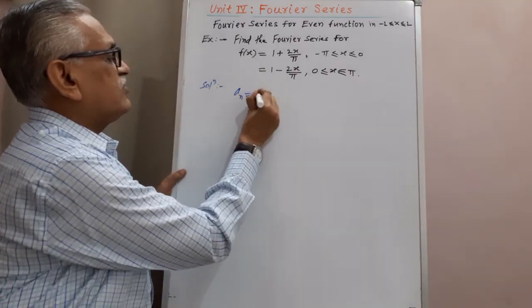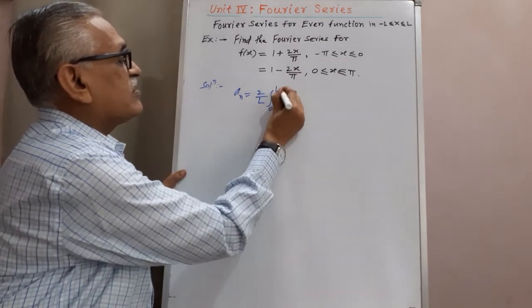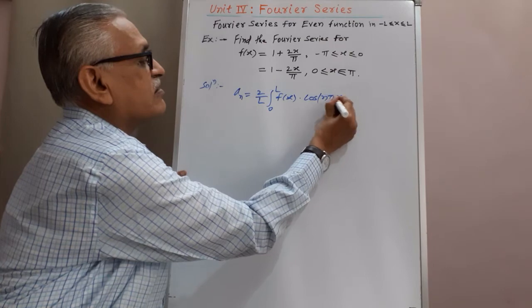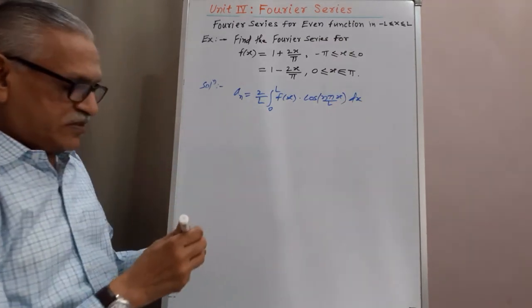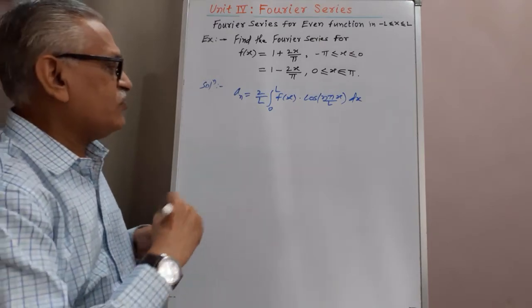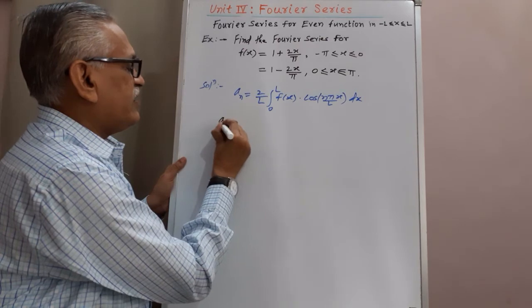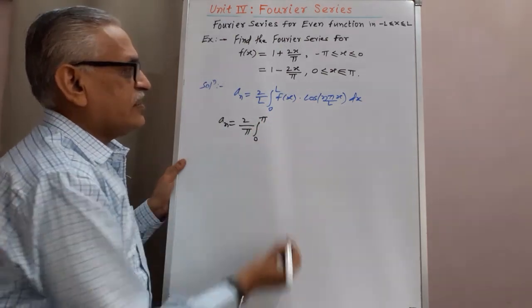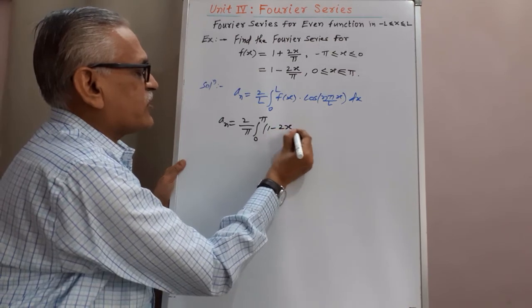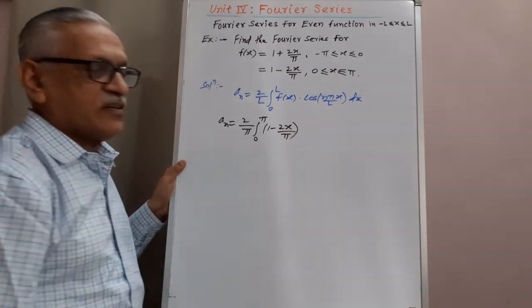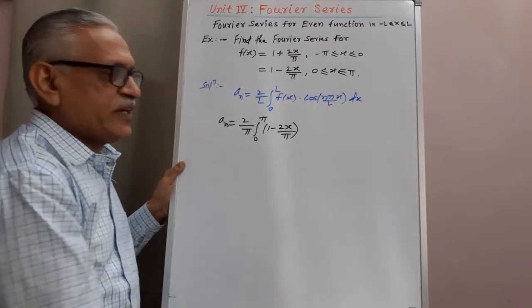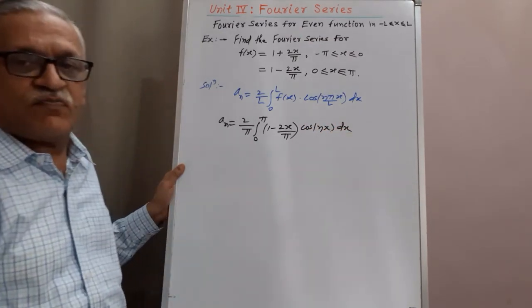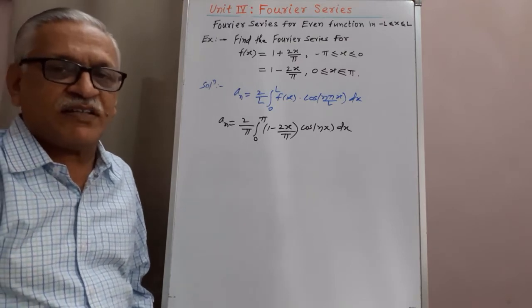aₙ is given by (2/l) × integral from 0 to l of f(x) cos(nπx/l) dx. So aₙ = (2/π) × integral from 0 to π of (1 − 2x/π) × cos(nx) dx, since π cancels in nπx/π. As this is an integration of a product of two terms in x, we apply integration by generalized parts.